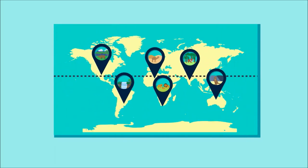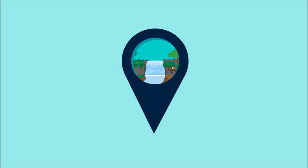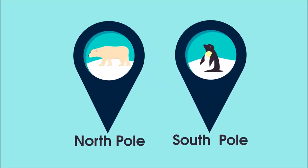Knowing this information, where would you expect to find the habitats with the lowest biodiversity? Pause the video and have a think. Habitats at the equator, such as tropical rainforests, usually have the highest biodiversity. So if you thought habitats at the north or south poles, such as the polar desert, you're correct.